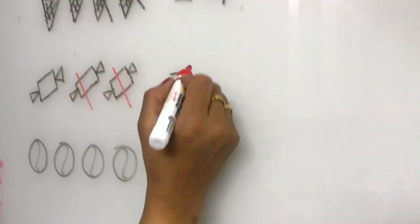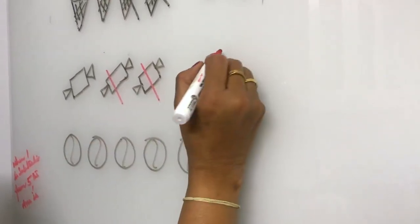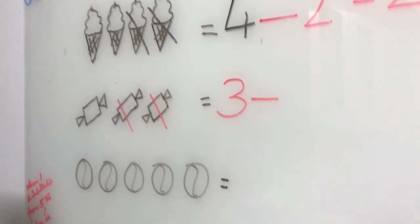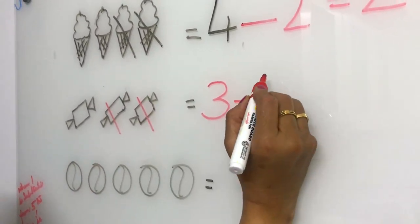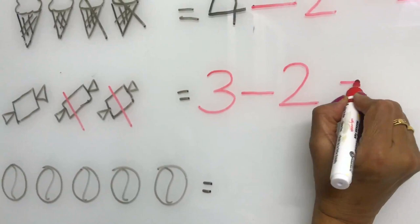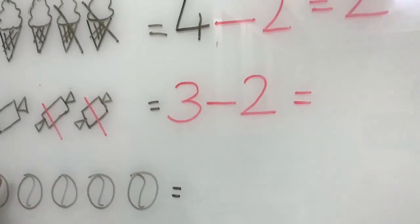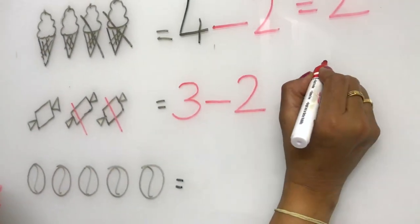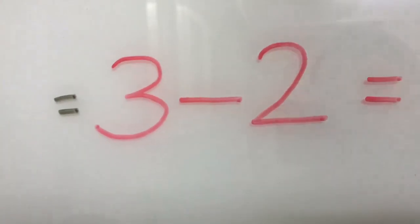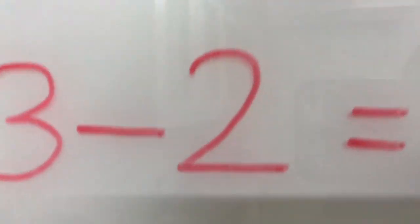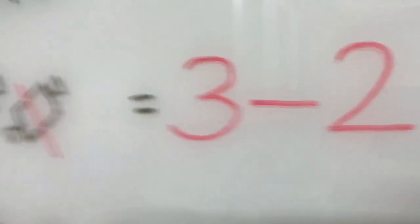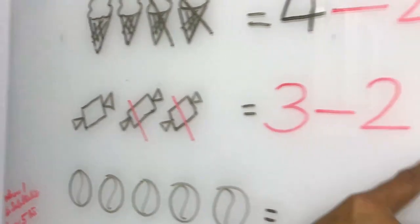See here: three chocolates were there. In those three chocolates, we gave two to Anandiyam and Tejaswini. How many we gave? Two. So what is the answer? How many remaining chocolates are here? One. Three minus two equals one. When two is subtracted from three, the answer is one.